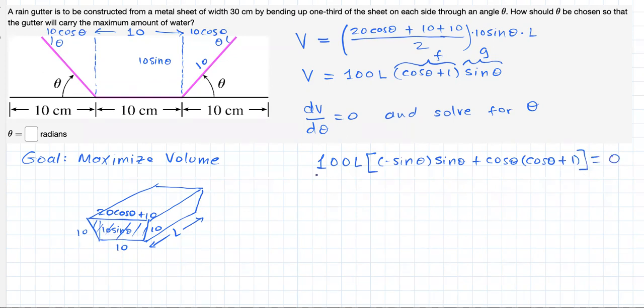Now, important. Notice if we divide both sides of this equation by 100 times L, which is a constant, this can be removed from the equation.